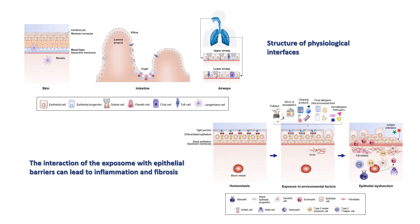In this article, we start reviewing the structure of physiological interfaces, starting with the skin, which is a very strong physical barrier meant to isolate the body from the environment. It is composed of different layers of epithelial cells, finally terminally differentiated keratinocytes and also the stratum corneum. In the skin, we can also find other resident cells like Langerhans cells.